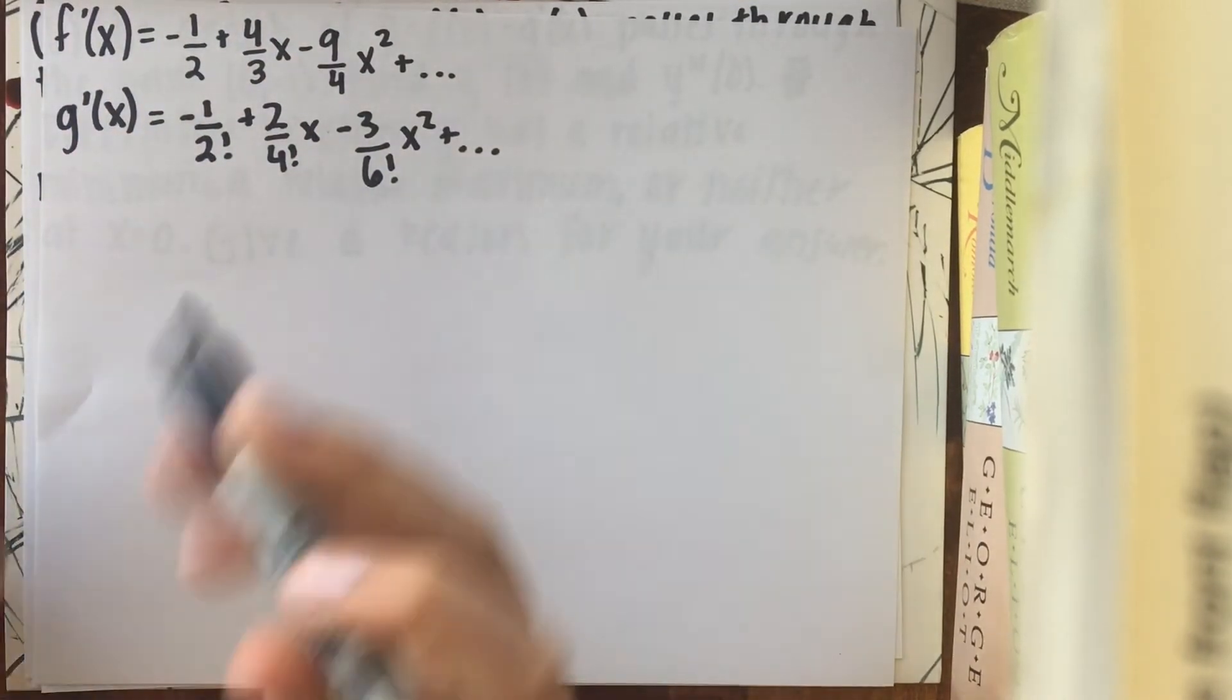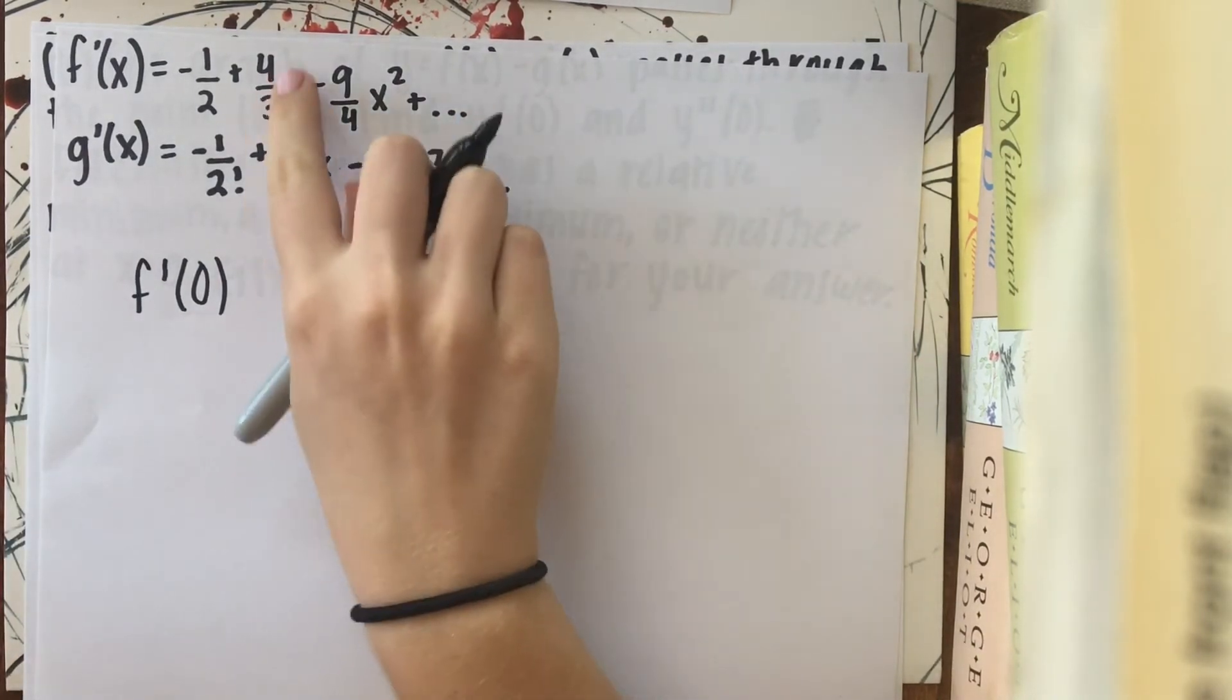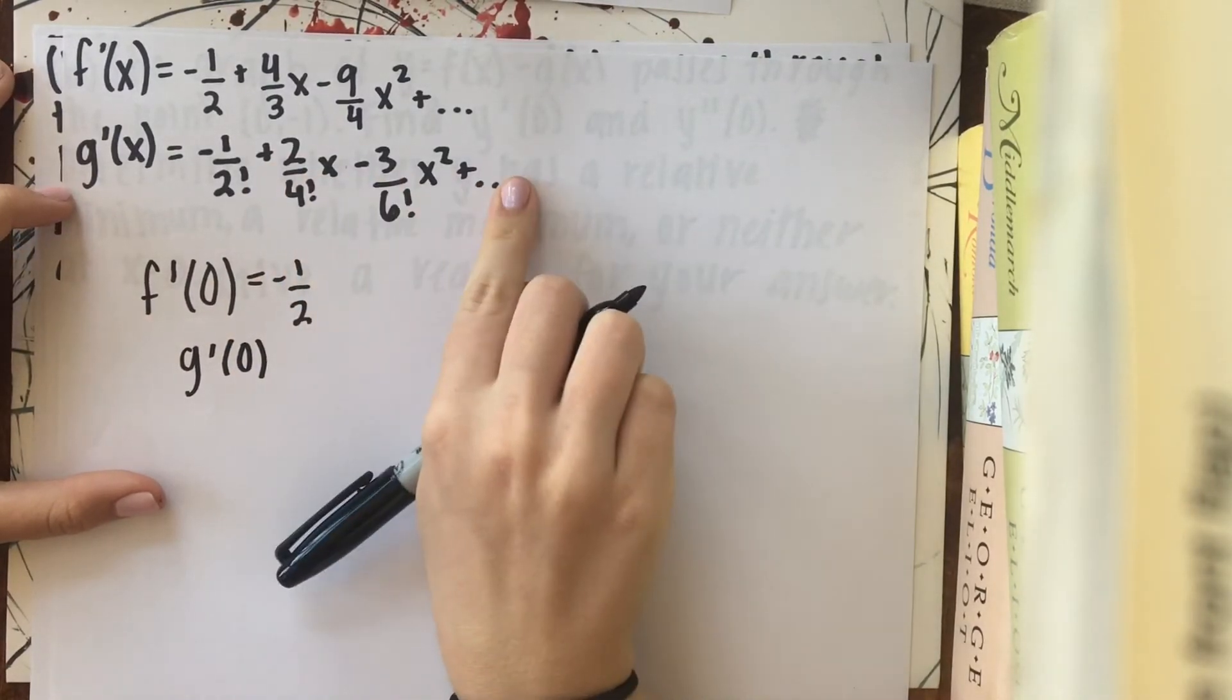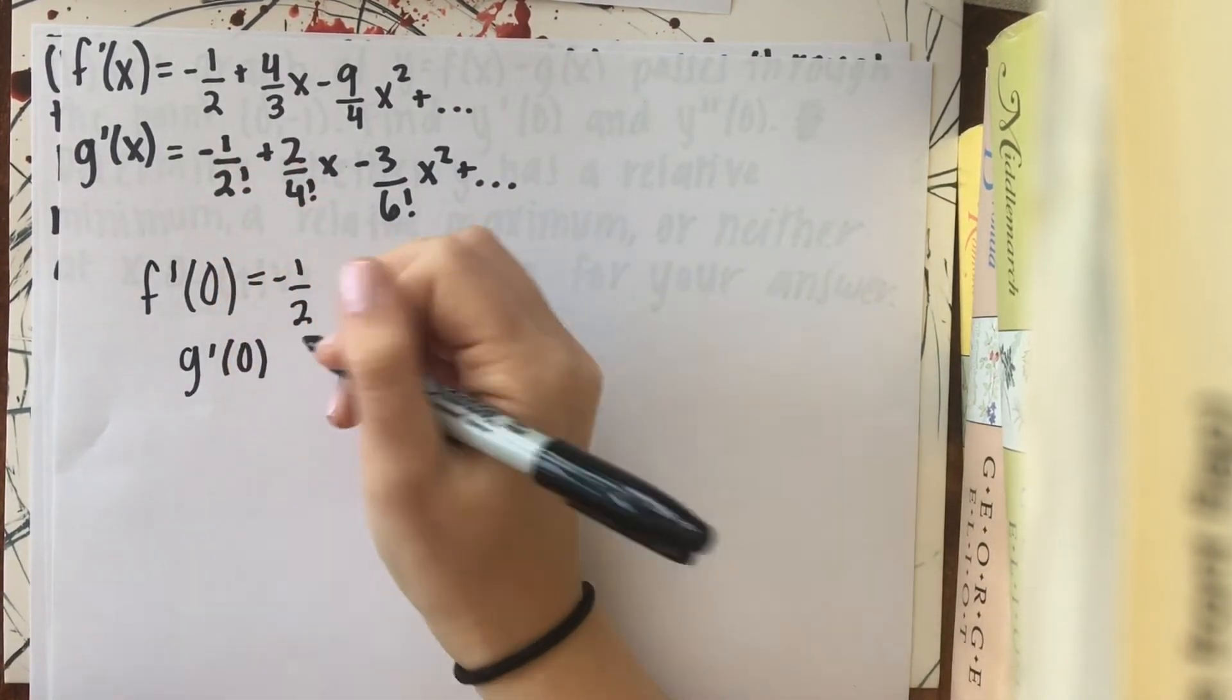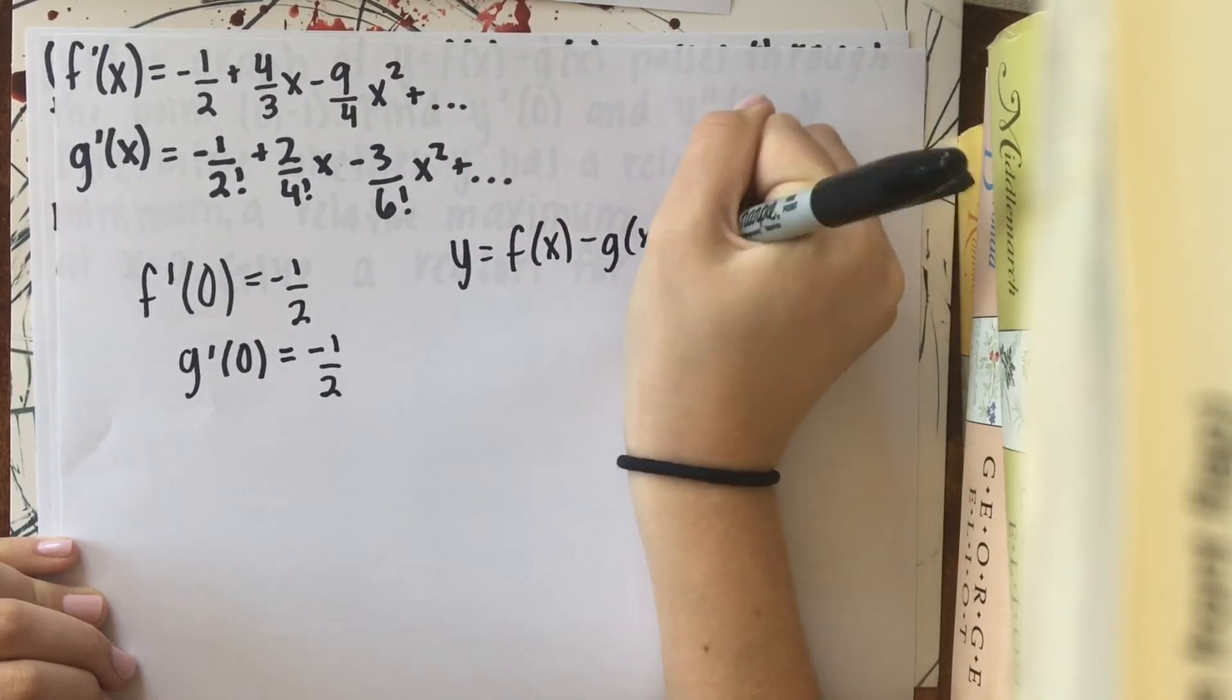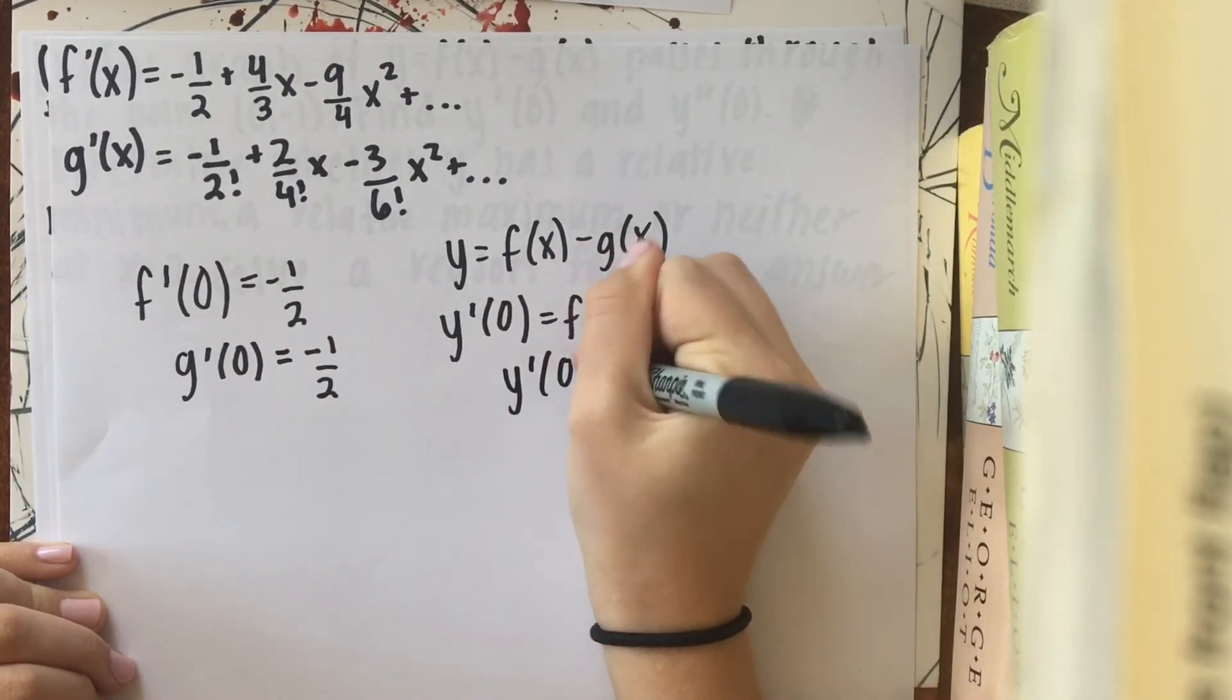And now I'm going to evaluate at 0. So I get f prime of 0. And if you can see, there's going to be an x in all the terms following here. So when you plug in 0, all of the terms are basically going to cancel out. And so you're just going to be left with a negative 1 half. And now for g prime of 0. It's the same thing. All of these terms are going to go away because when you plug a 0 in, they're just going to turn to 0. And so we're left with this negative 1 over 2 factorial, which is the same thing as negative 1 half. So if we're looking at this equation y, which equals f of x minus g of x, y prime of 0 is going to equal f prime of 0 minus g prime of 0. And the two of them are equal. So y prime of 0 is going to equal 0.